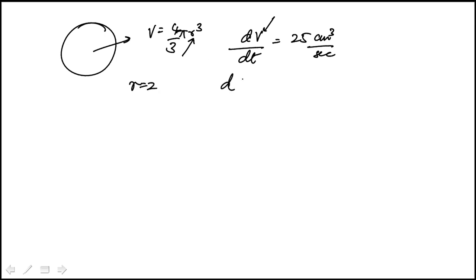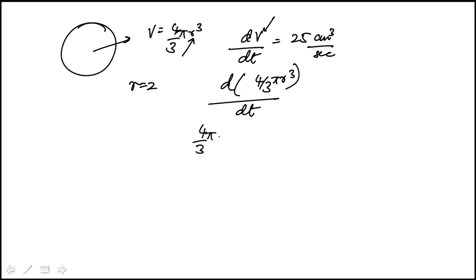I can replace the volume in terms of the radius as 4/3 π r³, and write this in terms of the rate of change of the radius. The derivative of r³ is 3r², so dV/dt becomes 4/3 π · 3r² · dr/dt, which equals 25.